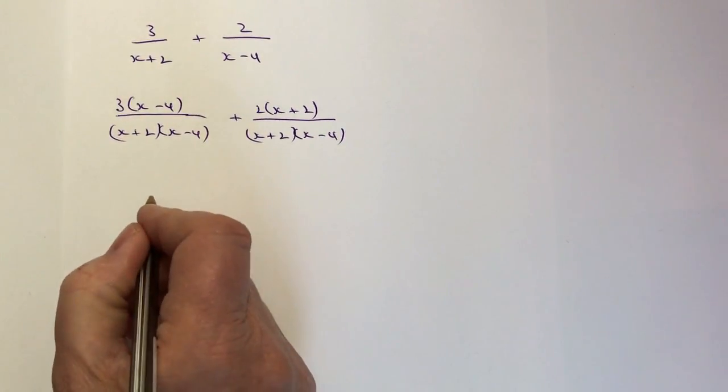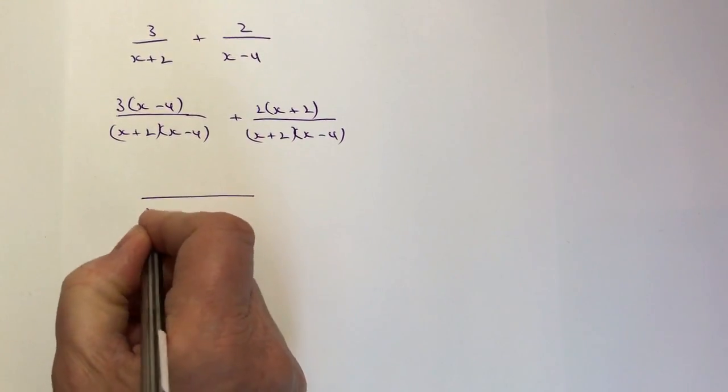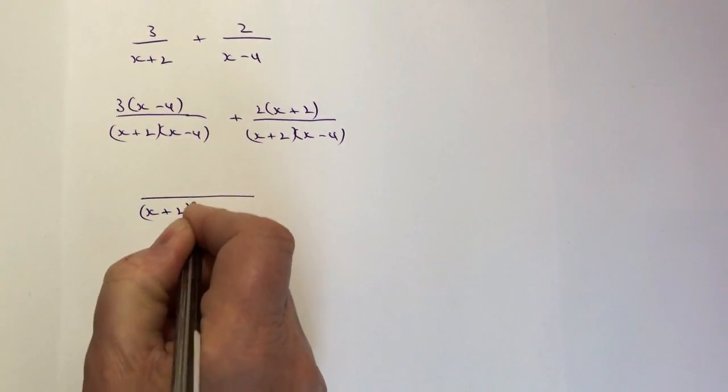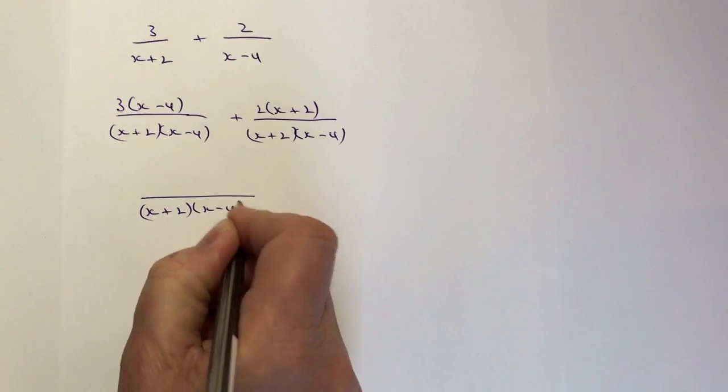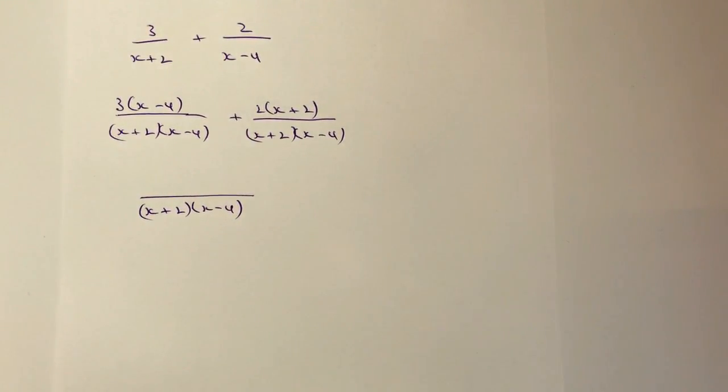That's (x+2) multiplied by (x-4), and we're going to multiply that out in a few minutes. The top I'm going to multiply out straight away.